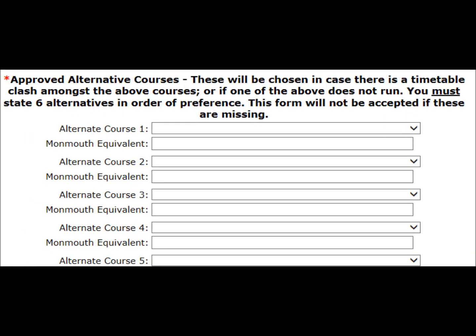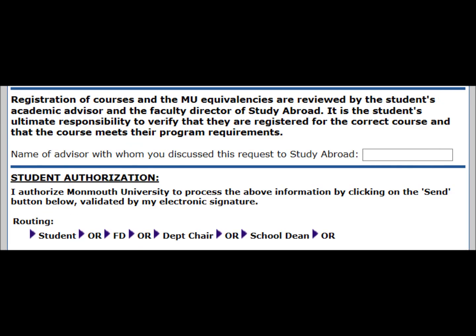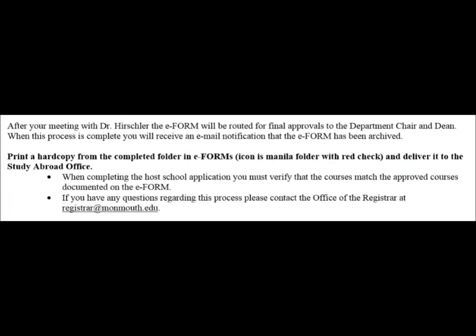Students must also select alternates. Our partners require the selection of alternates in case it's not possible to register you in one or more of your primary choices. This form will be routed to the Office of the Registrar (OR), the Faculty Director of Study Abroad (FD), the Department Chair, and School Dean. After you've met with me and made a final decision about the courses you want to take, save draft and click Send.